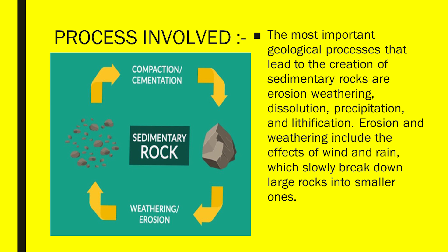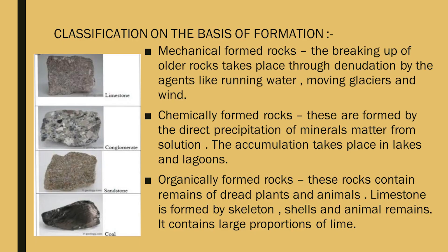Classification on the basis of formation: mechanically formed rocks — the breaking up of older rocks takes place through denudation by agents like running water, moving glaciers, and wind. Chemically formed rocks — these are formed by the direct precipitation of mineral matter from solution; the accumulation takes place in lakes and lagoons. Organically formed rocks — these rocks contain remains of dead plants and animals; limestone is formed by skeletons, shells, and animal remains, and contains larger proportions of lime.